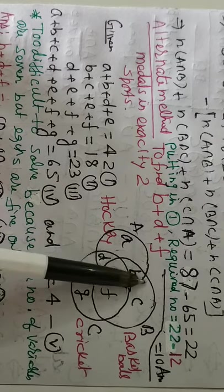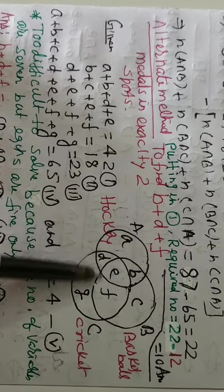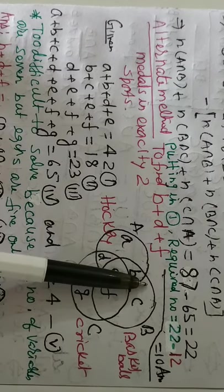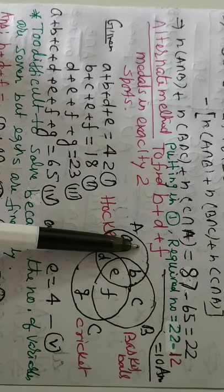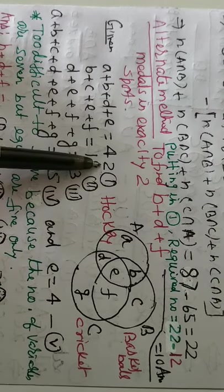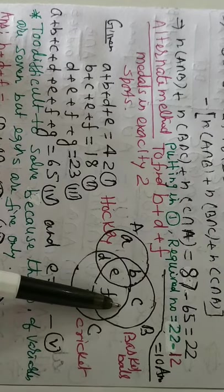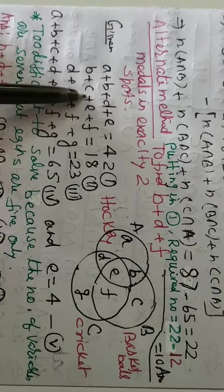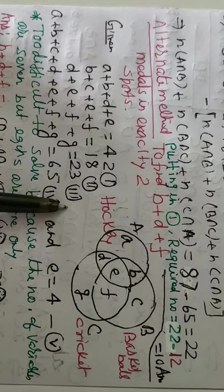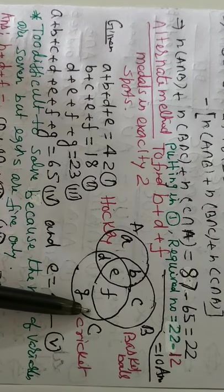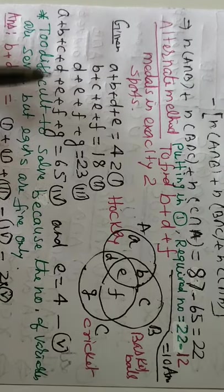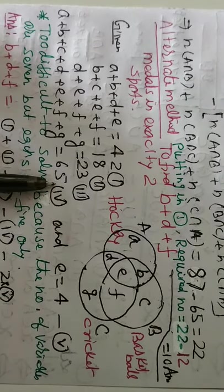According to question. Medal in A. This is for hockey. A, B, D, E. Here. 42. Next. 18 for basketball. B, C, E, F. 18. And similarly, D, E, F, G is 23. And all the students 65 got the medals. So, given already sum of all is 65. E is 4. Medal in all 4.